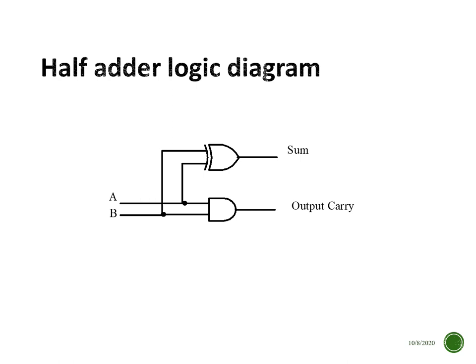From those two equations, A and B go into an AND gate to produce the carry output, and A and B go into an exclusive OR gate to produce the sum output. Drawing a box around that gives us the complete logic circuit for the half adder.